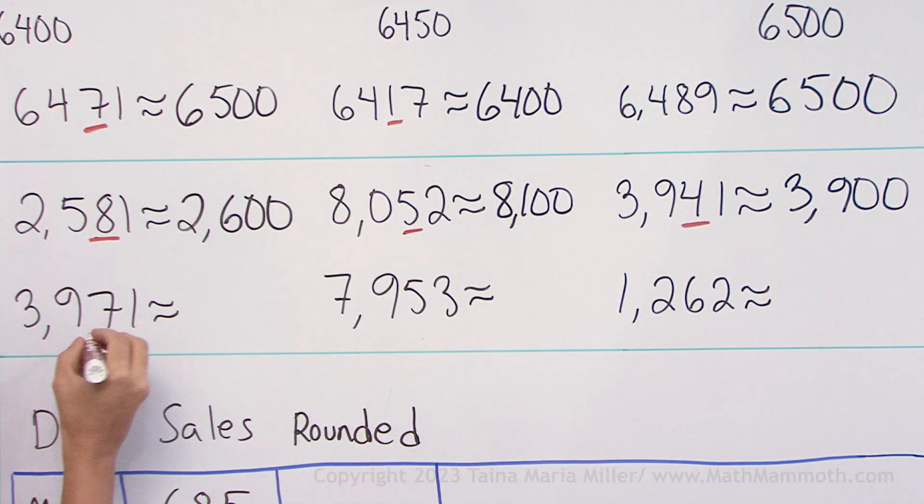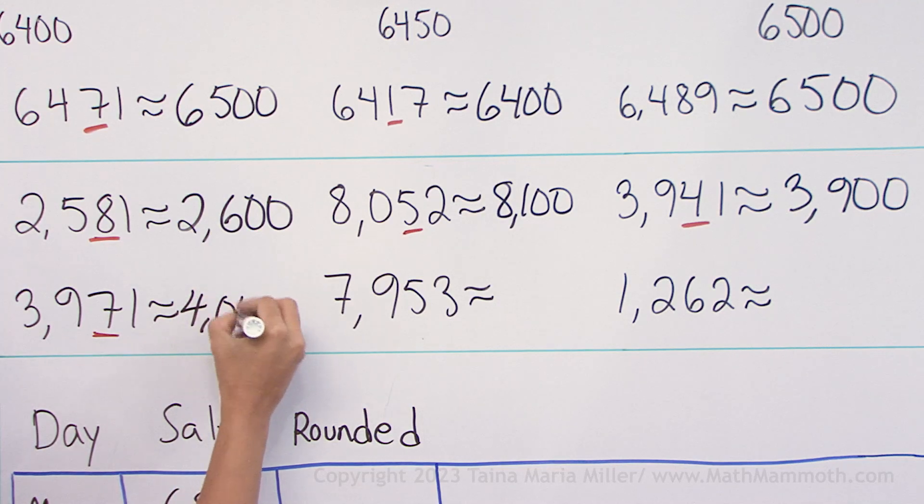3971. Seven. Round up. What's the next whole hundred? After 900, we come to the next whole thousand actually. So this is rounded to 4000.